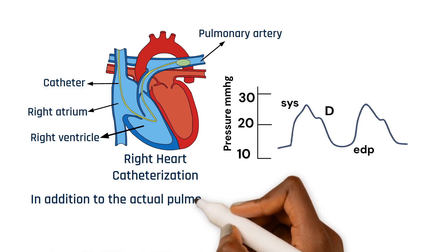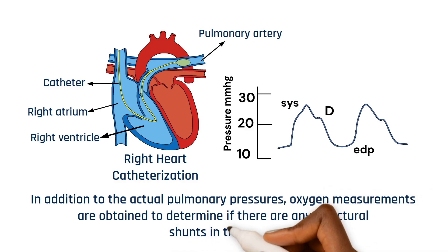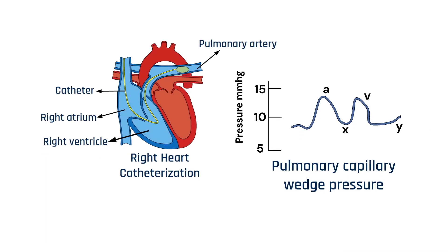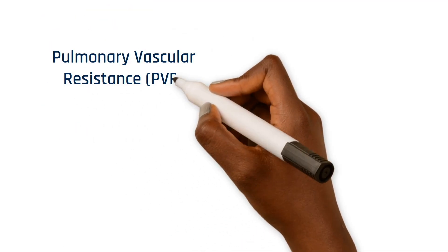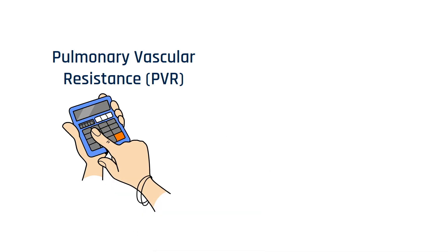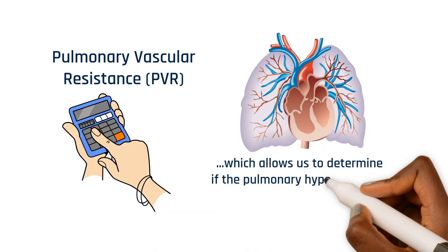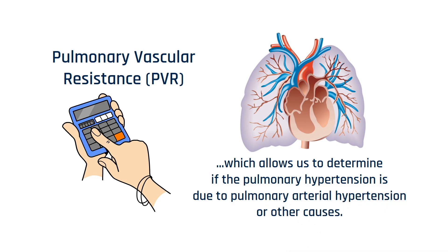The measurements are obtained as we advance the catheter. In addition to the actual measurements, we measure oxygen concentrations to determine if there are any structural shunts in the heart. The pulmonary capillary wedge pressure is obtained, which gives us an estimate of the total volume of fluid in your body. The pulmonary vascular resistance is then calculated using all these measurements, which allows us to determine if the pulmonary hypertension is due to pulmonary arterial hypertension or simply due to other causes.